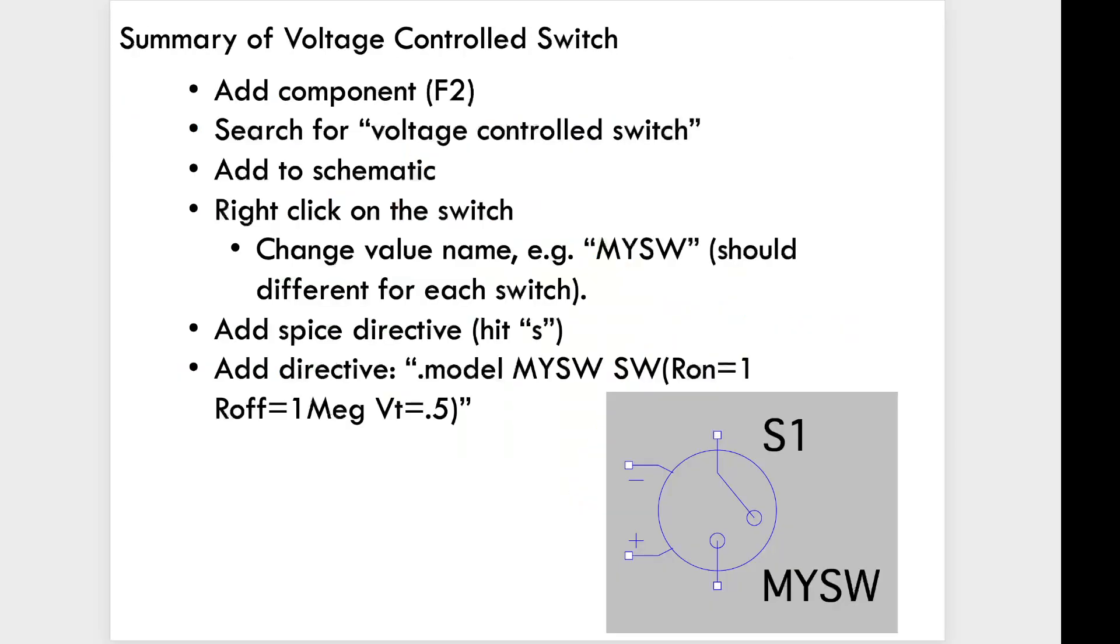Because I know a lot of people may be watching this later, I want to go straight into a quick summary of the voltage-controlled switch and how to make it. Add a component, search for the switch, add it to the schematic, right-click on that switch. You must change the value name. I suggest something like MySW, MySW1, MySW2. It should be different for every switch.